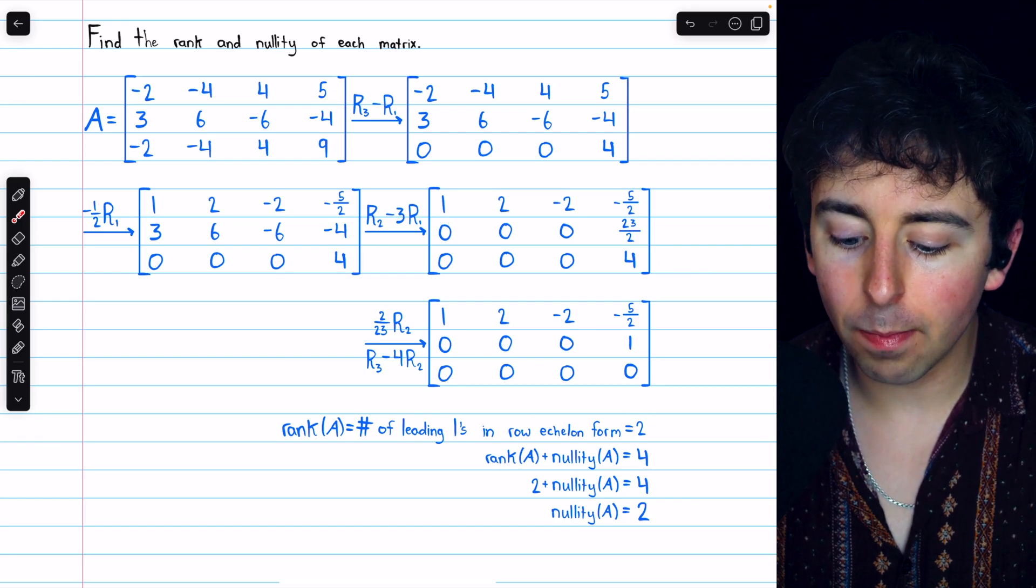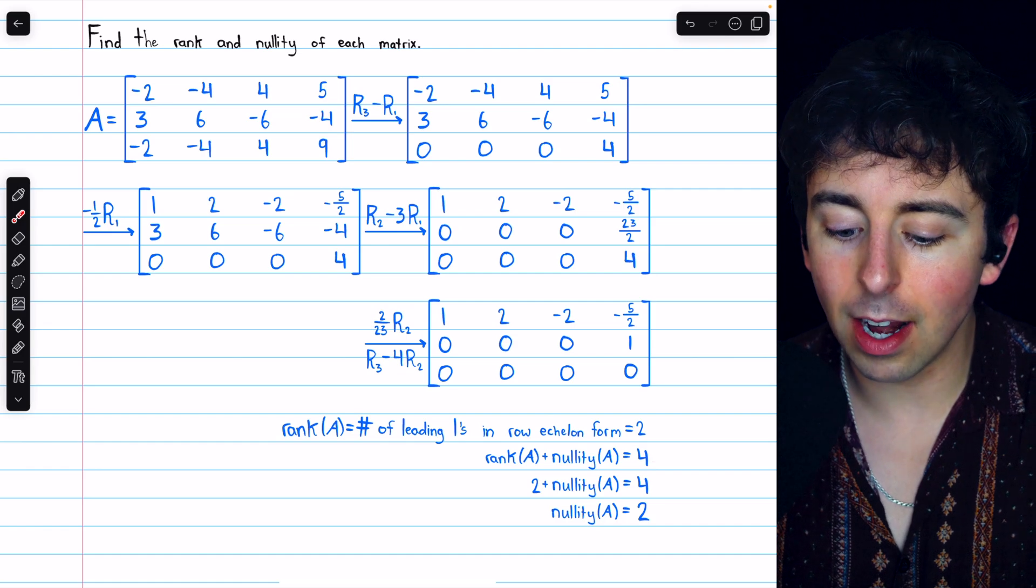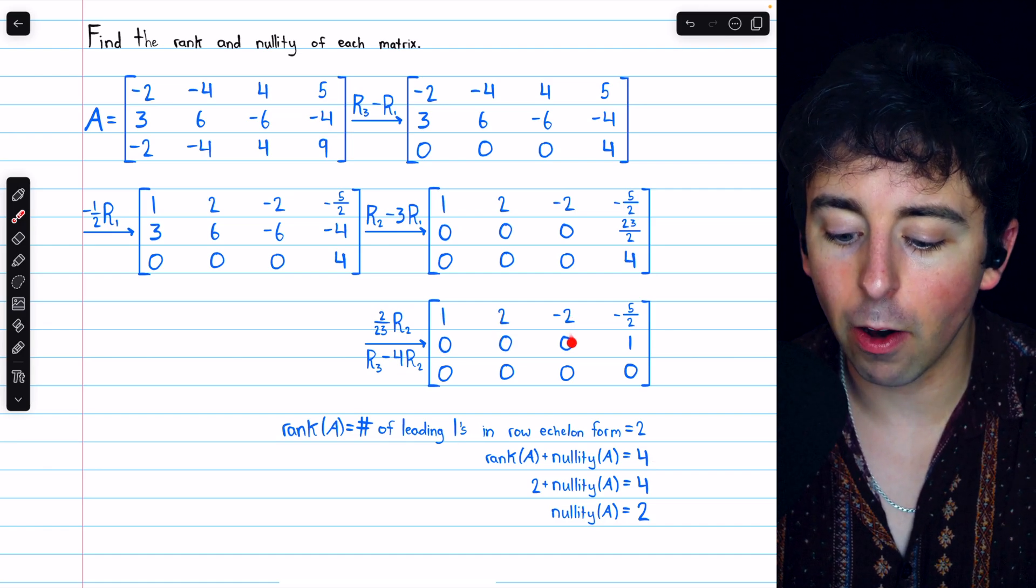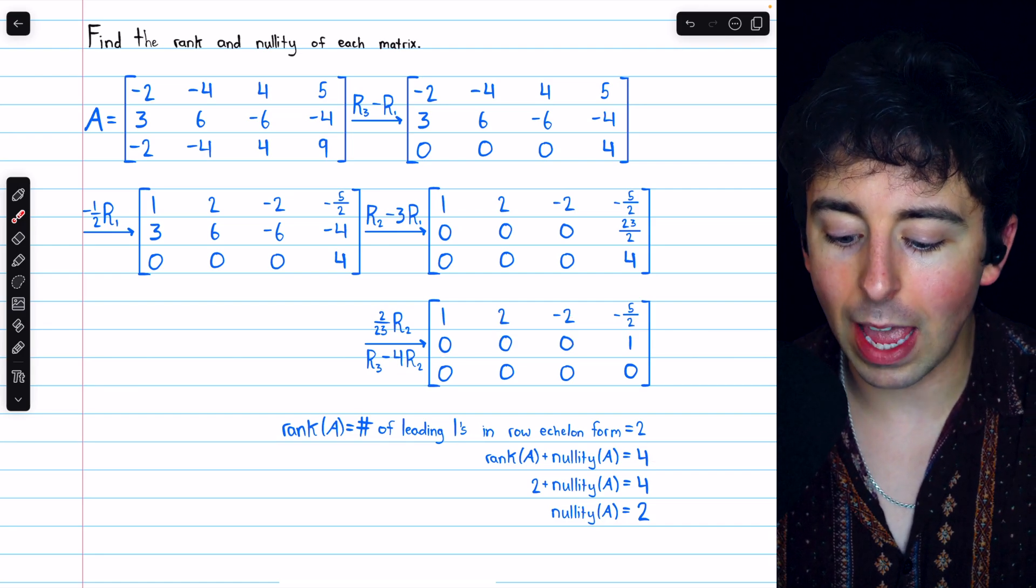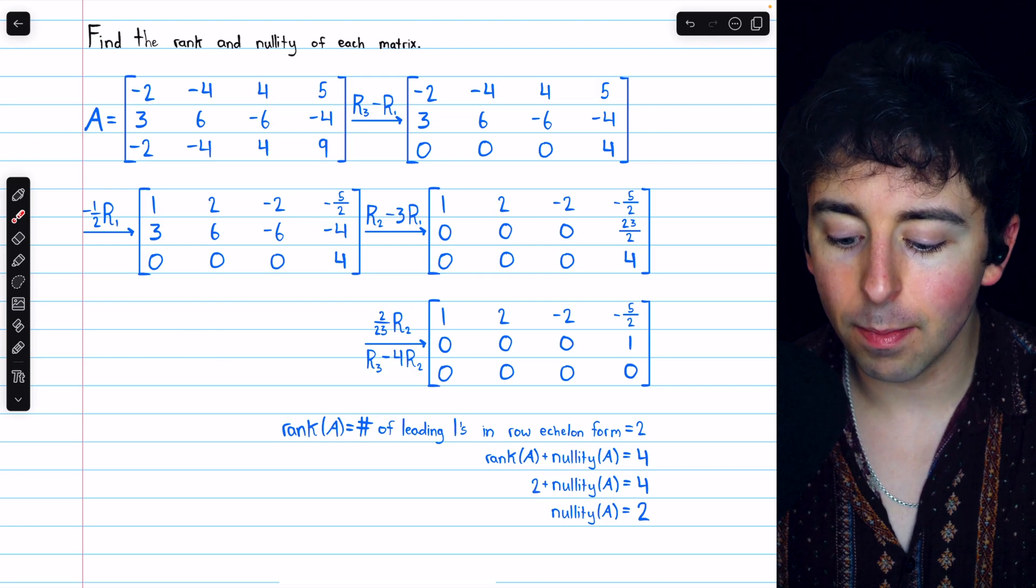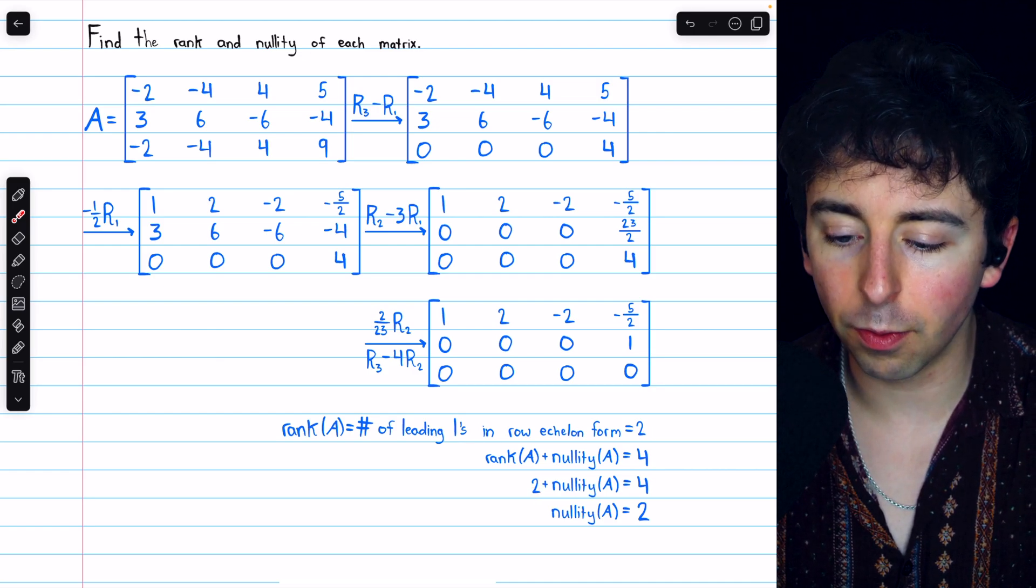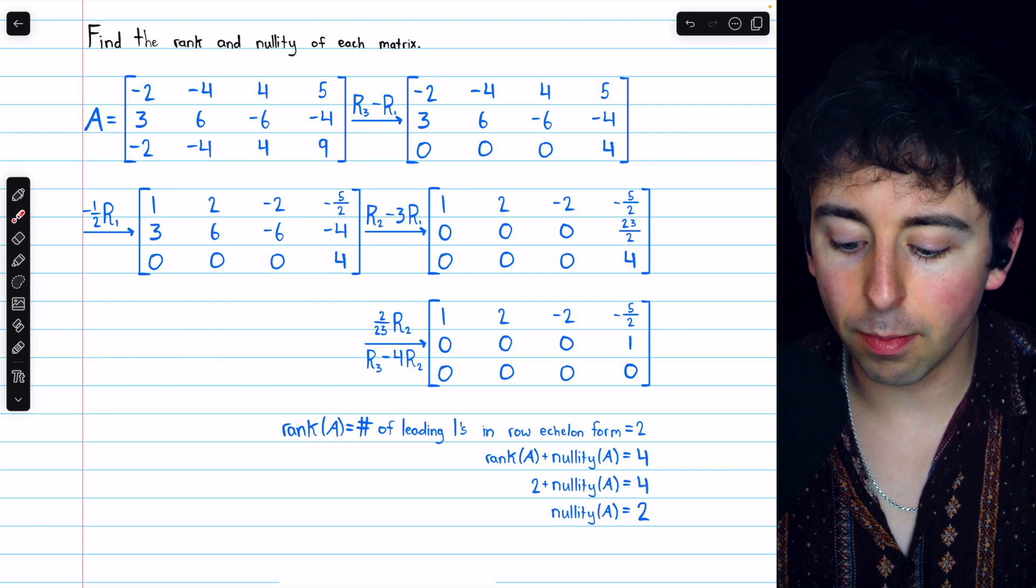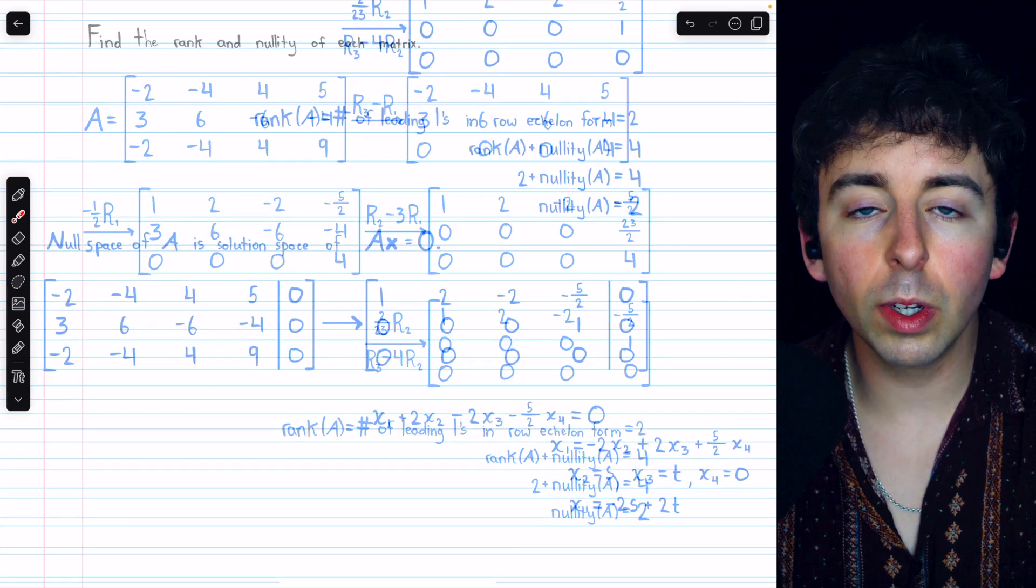We also know that the rank plus the nullity equals the number of columns, of which there are 4. Hence, we have that 2, the rank, plus the nullity is equal to 4, and so the nullity of this matrix must be 2.